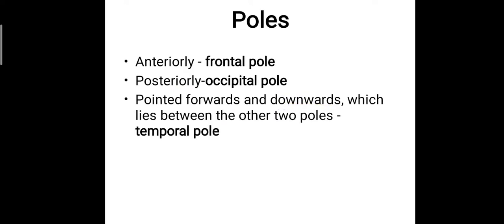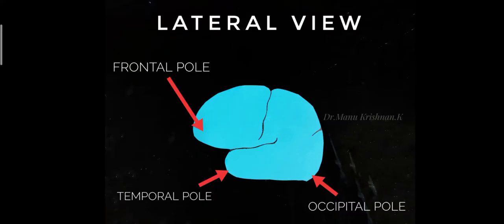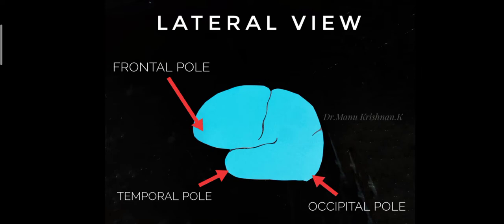The poles are three in number. The anterior pole is called the frontal pole, the posterior pole is called the occipital pole, and the pole that is pointed forwards and downwards — lying between the frontal pole and the occipital pole — is the temporal pole. Here we have a representation where you can clearly see the complete cerebrum with its frontal pole, occipital pole, and the temporal pole running downwards and forwards.